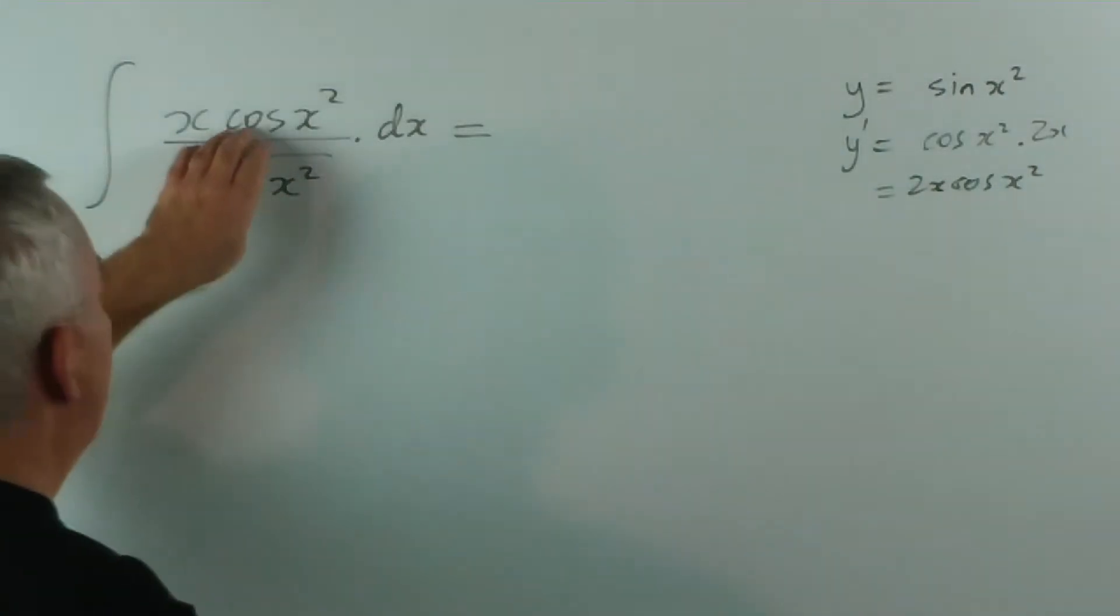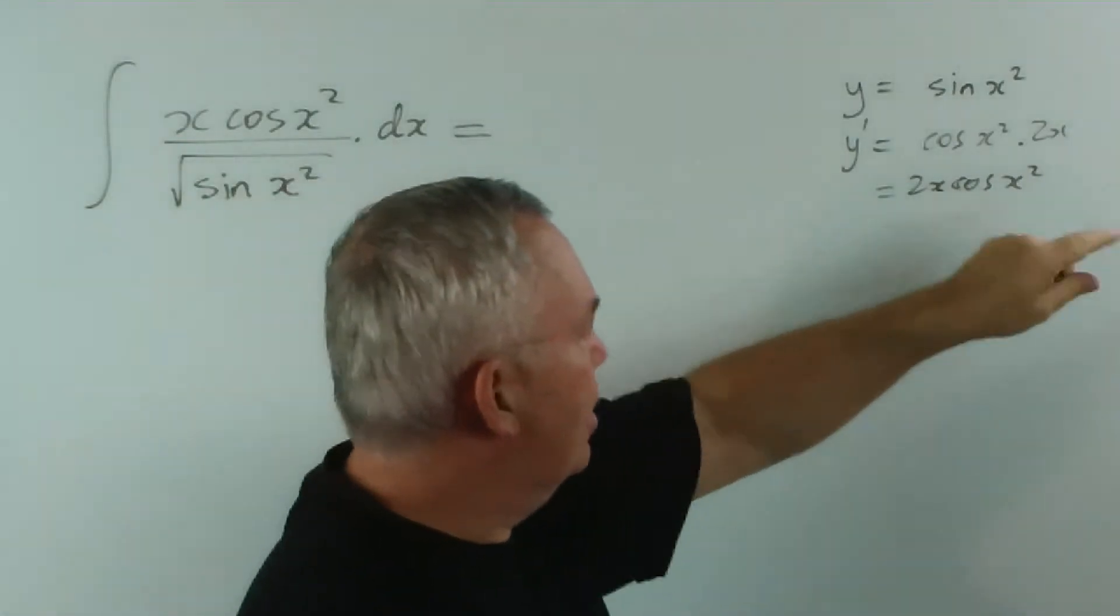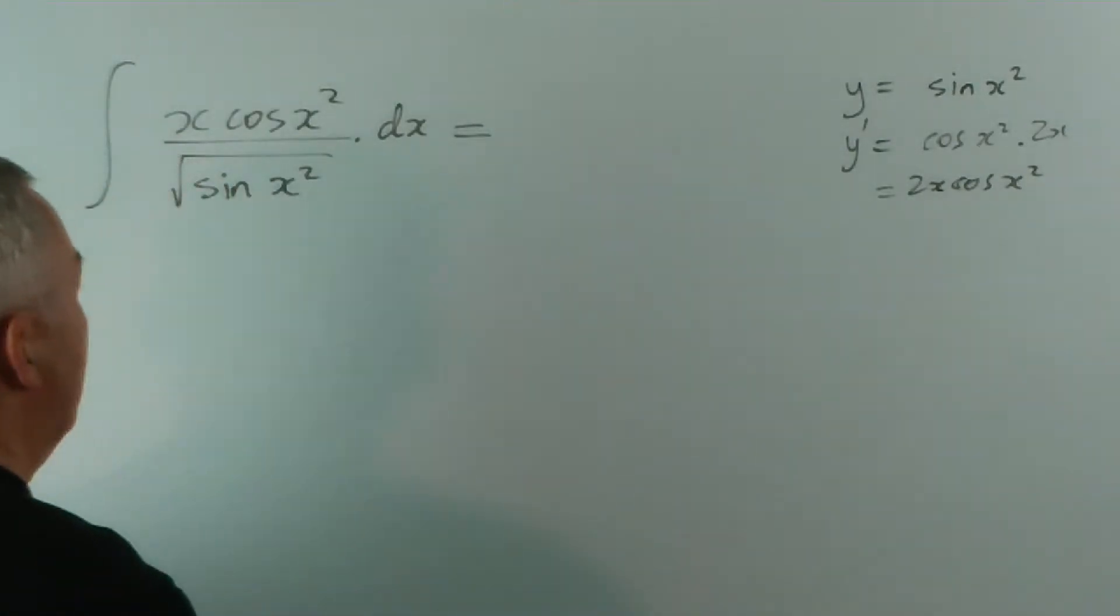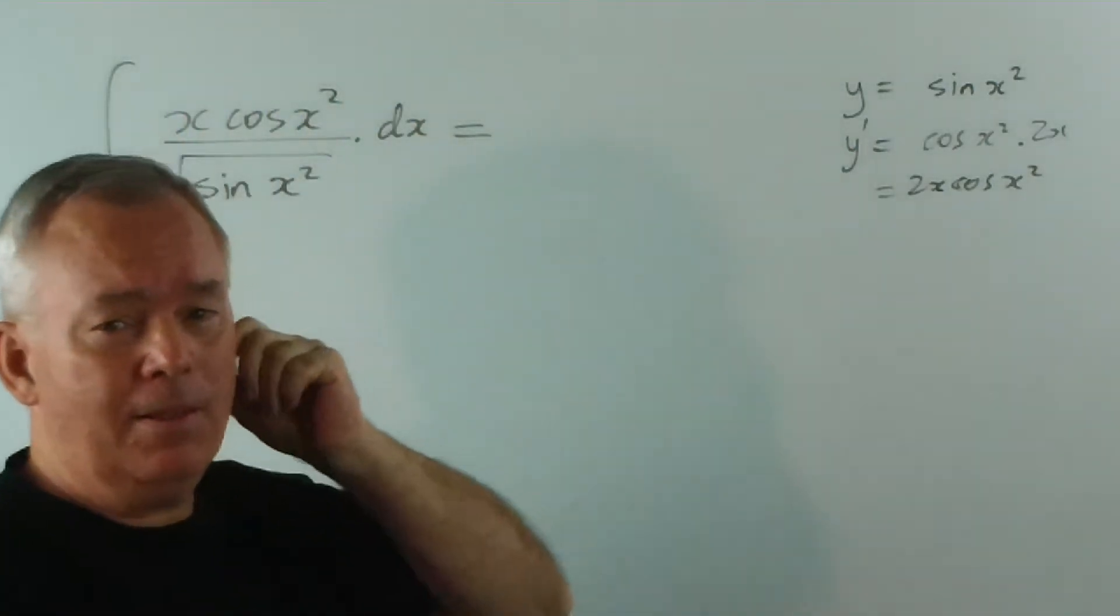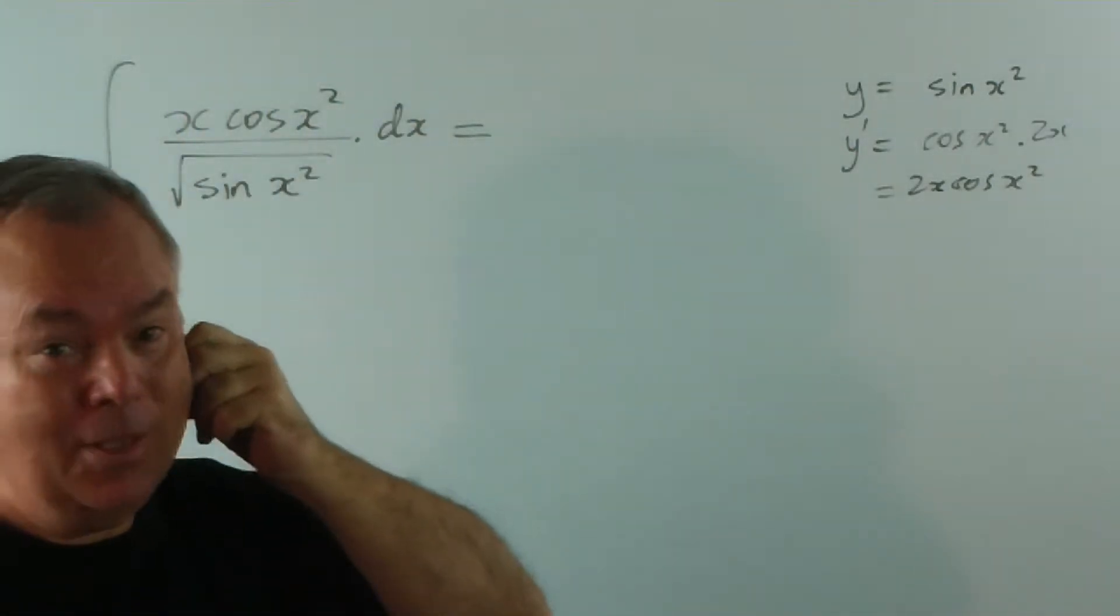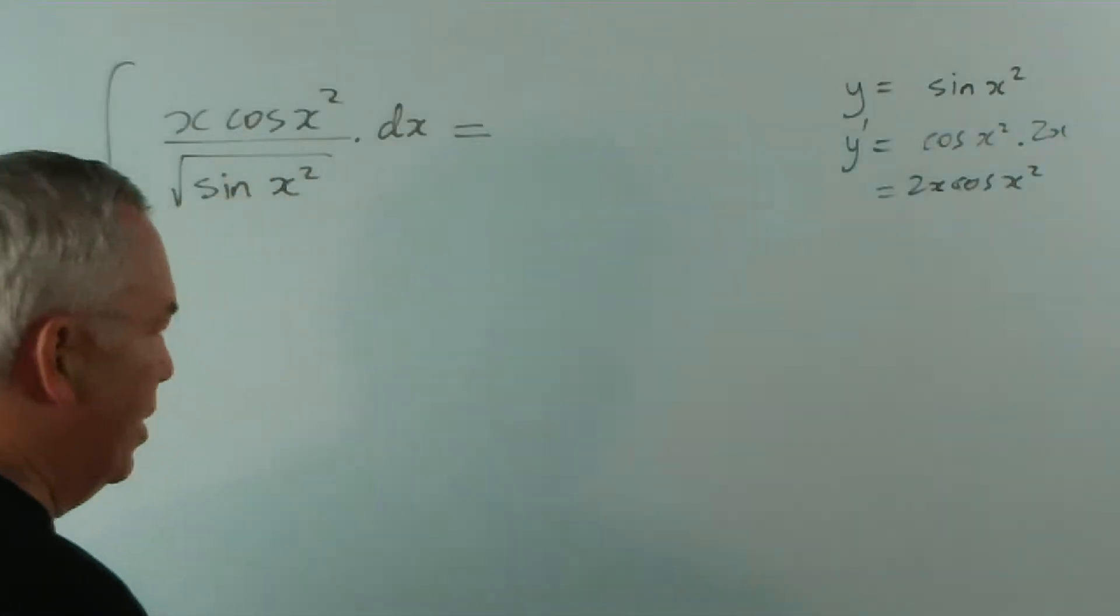You look back at your numerator and you think, my goodness, x cos x squared... we do, in fact, have that. So our answer potentially is going to be logarithmic. Is it? Well, let's see... it may not be.